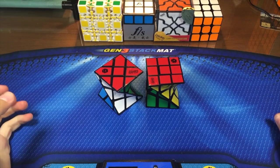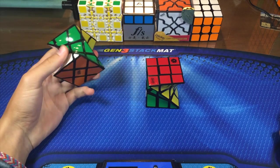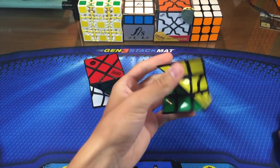Alright, so both of those felt really weird. The Fisher cube solve felt a bit more weird. And I don't know, I just enjoyed the 3x3 solve a lot more.